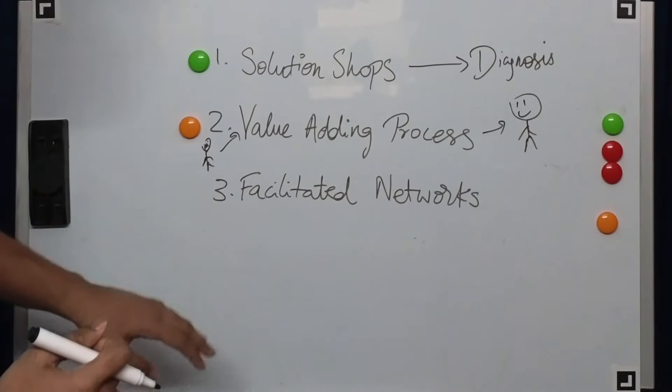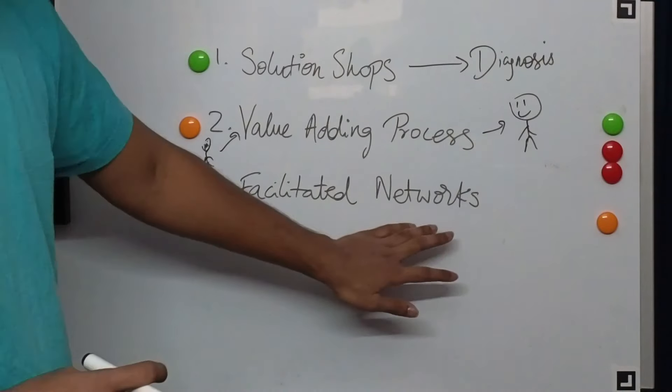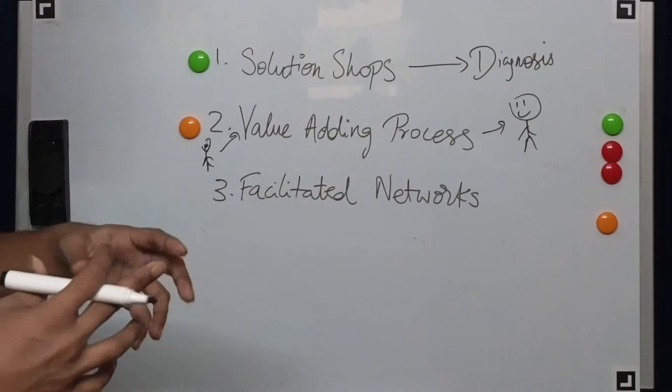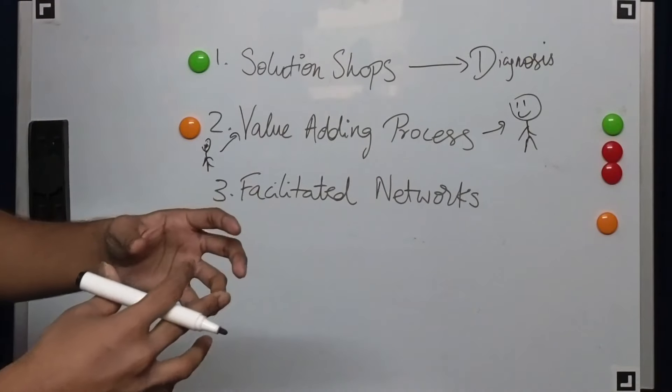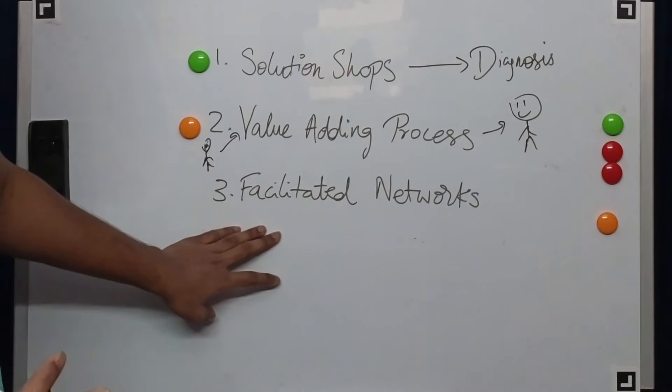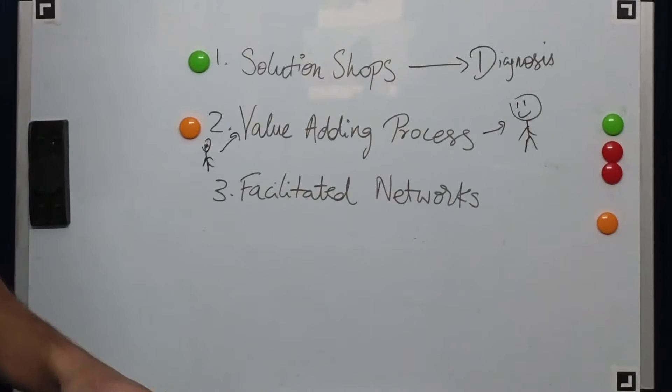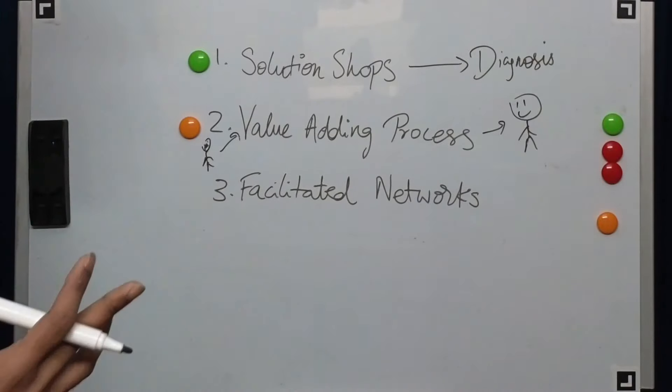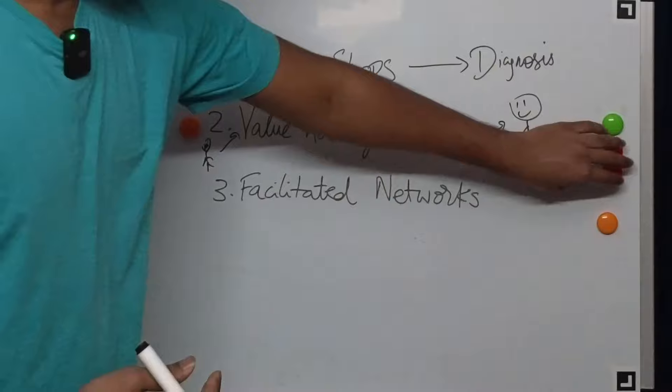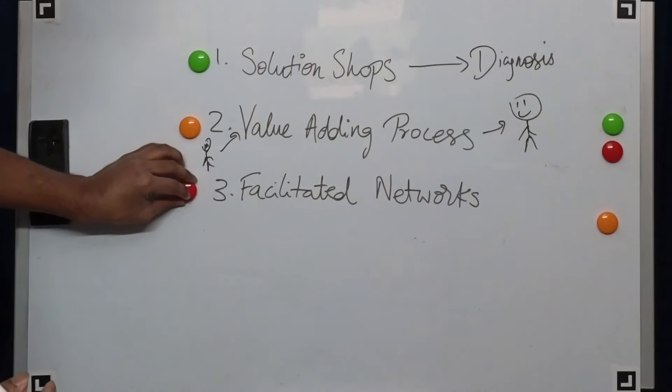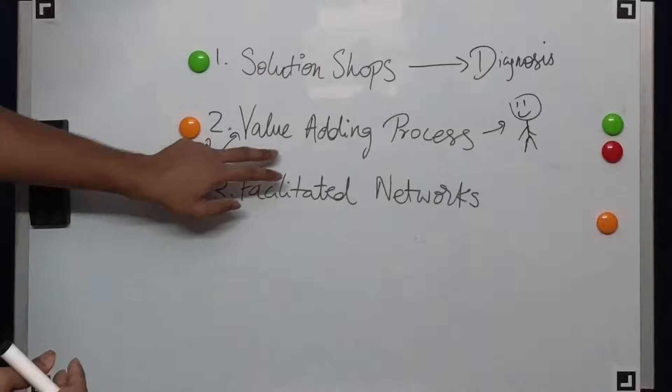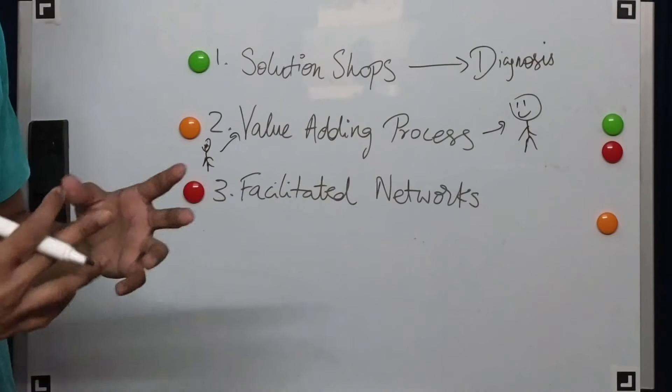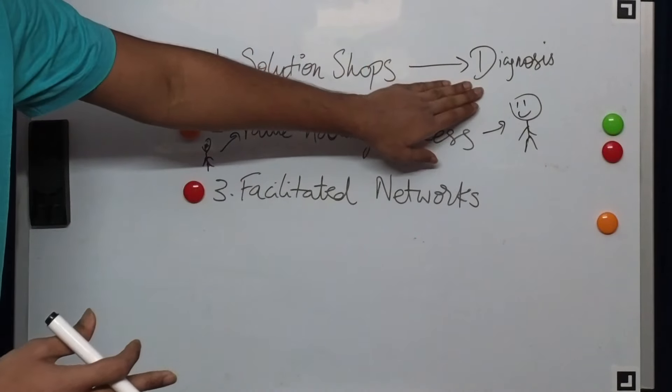They also talk about a third type of business model, which is facilitated networks. An example in the normal business sense would be something like eBay, a peer-to-peer network where there are participants and they all participate. The business model here is that they either charge for the transactions that they do on the network or they pay a subscription, a fixed fee subscription. What Clayton argues here is that while value-adding processes - this could be surgery, this could be a chemotherapy regimen - can be done separately once a diagnosis is given.